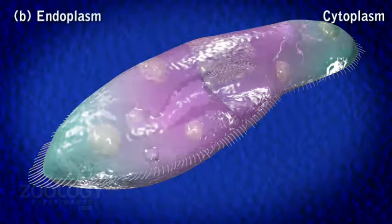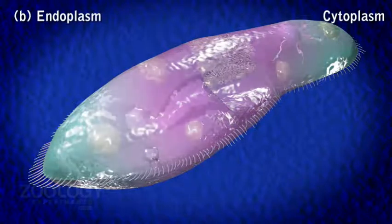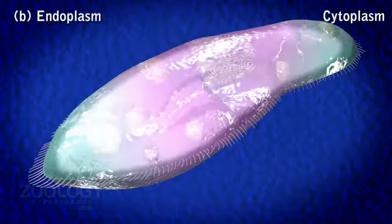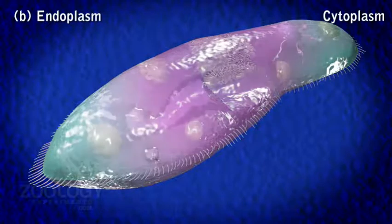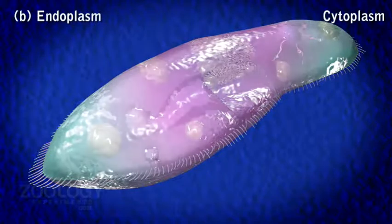2. Endoplasm: The large central granular and semi-fluid region is the endoplasm. It comprises the usual cell components like mitochondria, Golgi bodies, ribosomes, crystals, reserve food granules, etc.